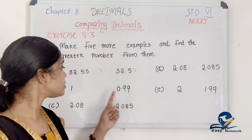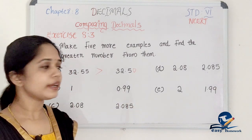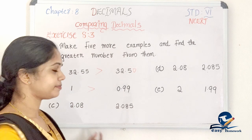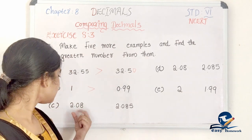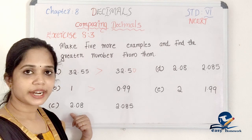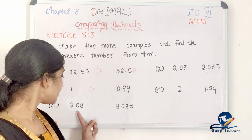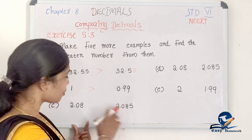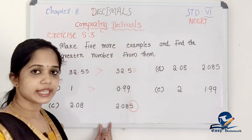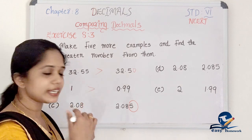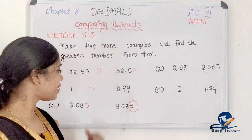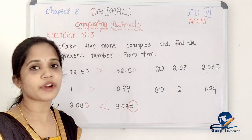Next, compare 1 and 0.99. Left side: 1 and 0 — 1 is greater. Next, compare 2.08 and 2.085. Left side equal: 2 and 2. Tenths and hundredths place equal: 0 and 0, 8 and 8. Thousandths place: here is 5, the other has no digit (0). So 2.085 is greater.